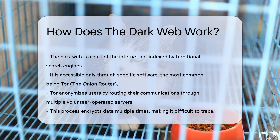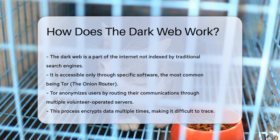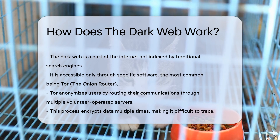Tor anonymizes users by routing their communications through multiple volunteer-operated servers. This process encrypts data multiple times, making it difficult to trace.